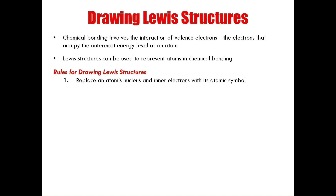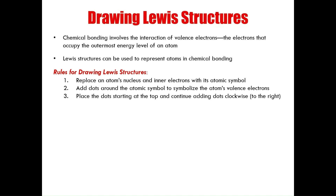The first rule: replace an atom's nucleus and inner electrons with its atomic symbol. The second: add dots around the atomic symbol to symbolize the atom's valence electrons. The third: place the dots starting at the top of the atomic symbol, and continue adding dots around the atomic symbol clockwise to the right. The fourth: after you've added the first four dots around the atomic symbol, begin again at the top by doubling up.